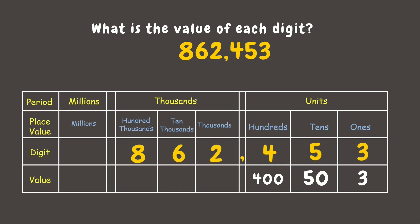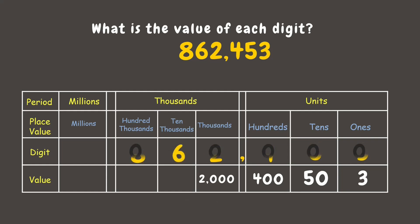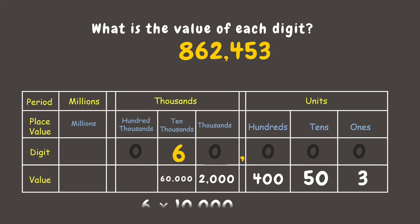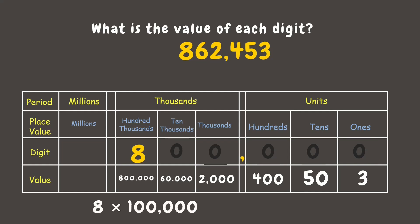For two, the value is 2,000, which also means 2 times 1,000. The value of six is 60,000, which means 6 times 10,000. And lastly, the digit eight has a value of 800,000, since it's 8 times 100,000. Wonderful, you're doing great so far!